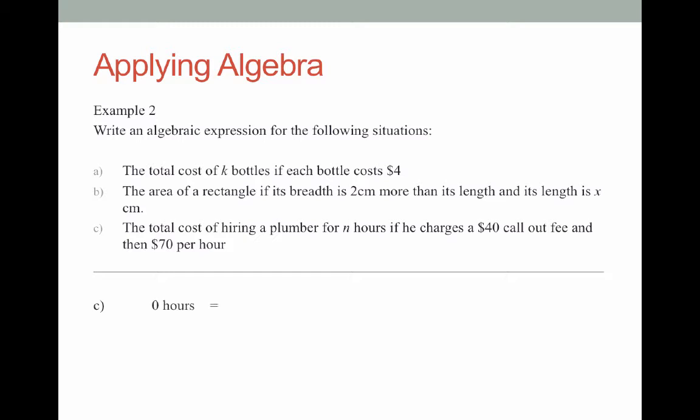If the plumber works for an hour he'll get that $40 call out fee plus the work the $70 for the one hour. So he gets $110. If he worked for two hours he would get the call out fee but he'd also work for two hours so he gets two lots of $70. This would be $180.